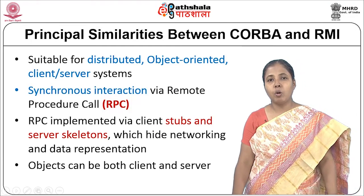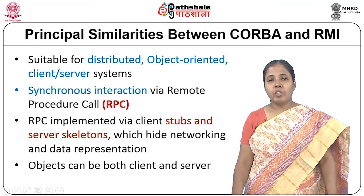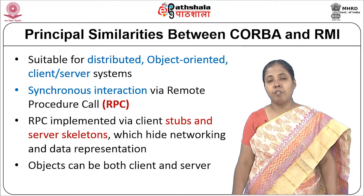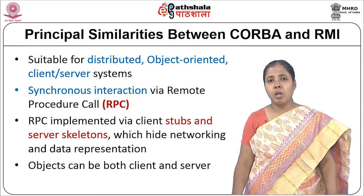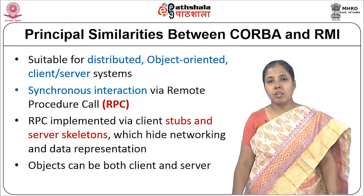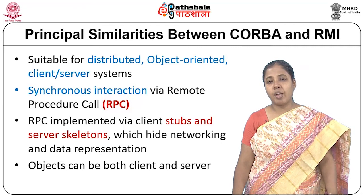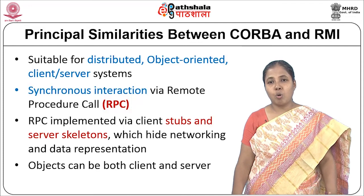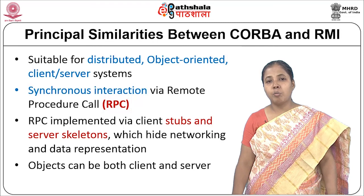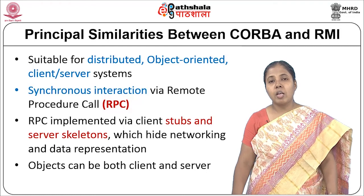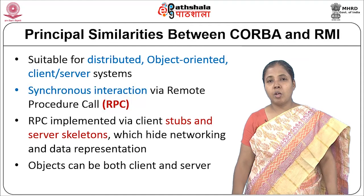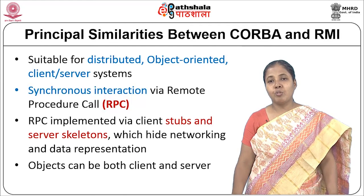We can see the principle similarities between CORBA and RMI. Both are suitable for development of distributed applications, both are object-oriented, and both support distributed client-server systems. Both RMI and CORBA allow synchronous interaction via remote procedure call, and this RPC is implemented using client stubs and server skeletons which hide all the networking and data representation. Both the client and the server are treated as objects.